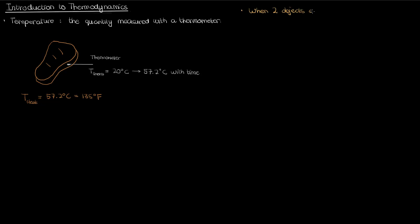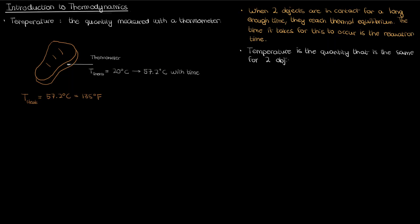So when two objects are in contact for a long enough time they reach something called thermal equilibrium. The time that this takes to occur is called the relaxation time, which depends on the objects in contact and how they're put in contact. And that leads to another way of thinking about temperature. Temperature is the quantity that is the same for two objects that have reached thermal equilibrium with each other.